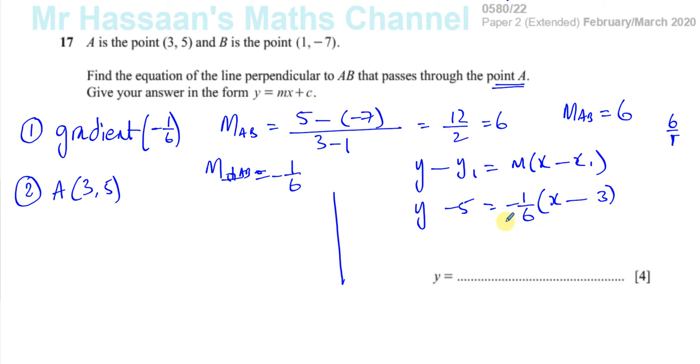So what we can do now is we want it in the form Y equals MX plus C. So we can say Y minus 5 equals minus 1 sixth X, and this is going to give you plus a half. So Y equals minus 1 sixth X plus a half plus 5, which is going to be plus 10 over 2. So you get Y equals minus 1 over 6 X plus 11 over 2. And there's your answer here.